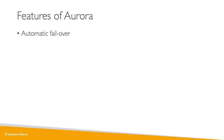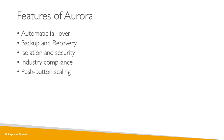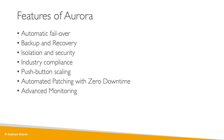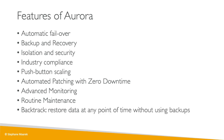Aurora provides many features: automatic failover, backup and recovery, isolation and security, industry compliance, push-button scaling via auto-scaling, and automated patching with zero downtime. There is also advanced monitoring and routine maintenance all handled for you. There is a feature called backtrack, which gives you the ability to restore data to any point in time without relying on traditional backups — you can say 'go back to yesterday at 4pm' or adjust to '5pm' and it will work.